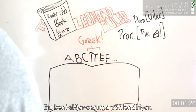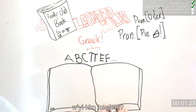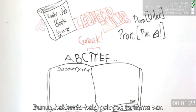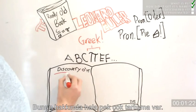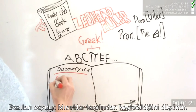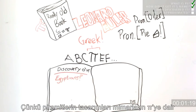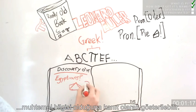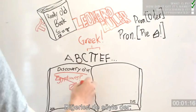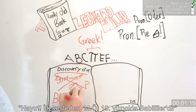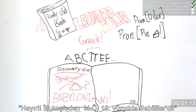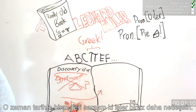Who discovered pi? There's still a lot of debate about this. Some believe it to have been first approximated by the Egyptians, because the construction of their pyramids leaves evidence of the architect's possible knowledge of pi. Others say it was the Babylonians in the 19th century BC. So let's skip forward a bit in history where things get a little bit clearer.